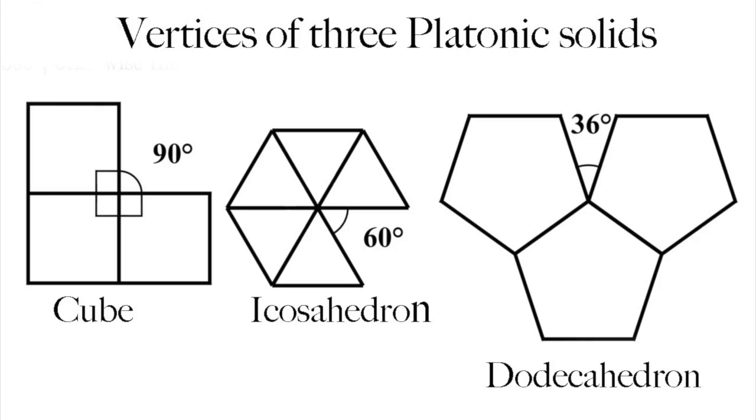The internal angles of a regular quadrilateral, or square, are 90 degrees. So you can make only one Platonic solid from squares, the cube, with three squares meeting at each vertex.